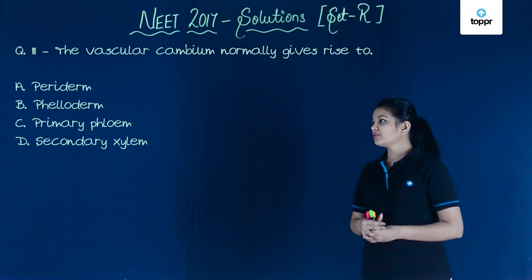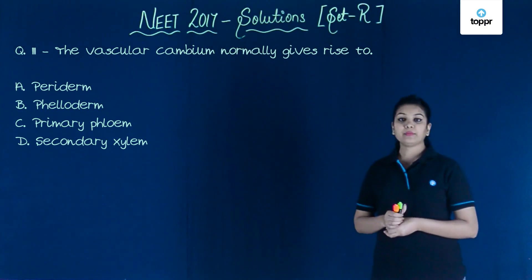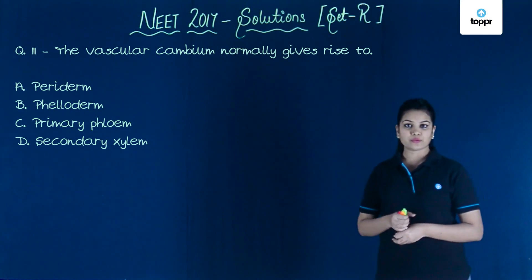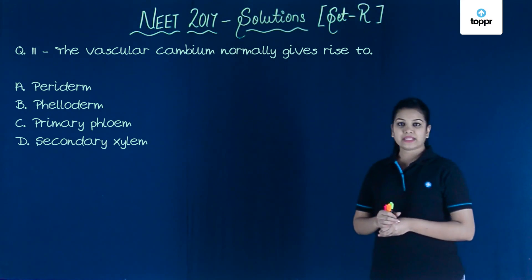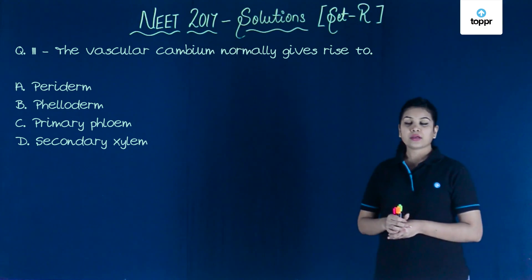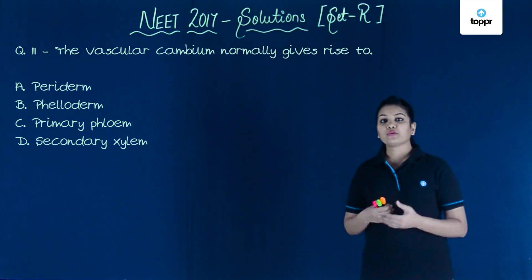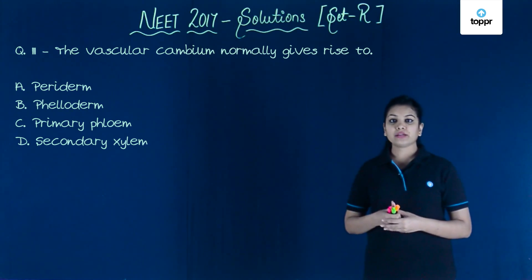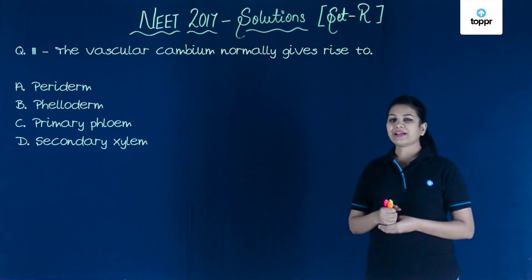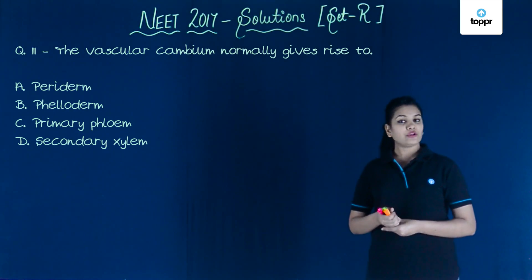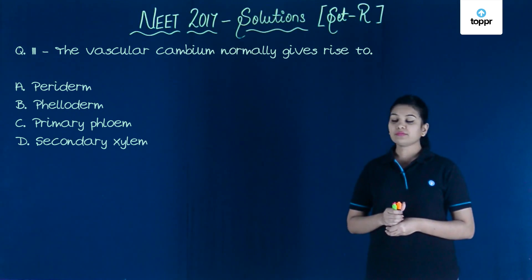The question asks what the vascular cambium gives rise to. Option one is periderm, which is produced by the cork cambium. Option two is phelloderm, which is also formed by the cork cambium.